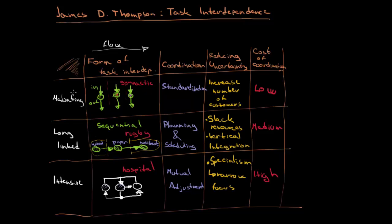So those were the three different types of technology. We began with the mediating type, where you can imagine a gymnastic team. Then we continued with the long-linked type, which involves sequences. And finally the intensive type of technology, which you can think of as a hospital. Hopefully see you in the next video.